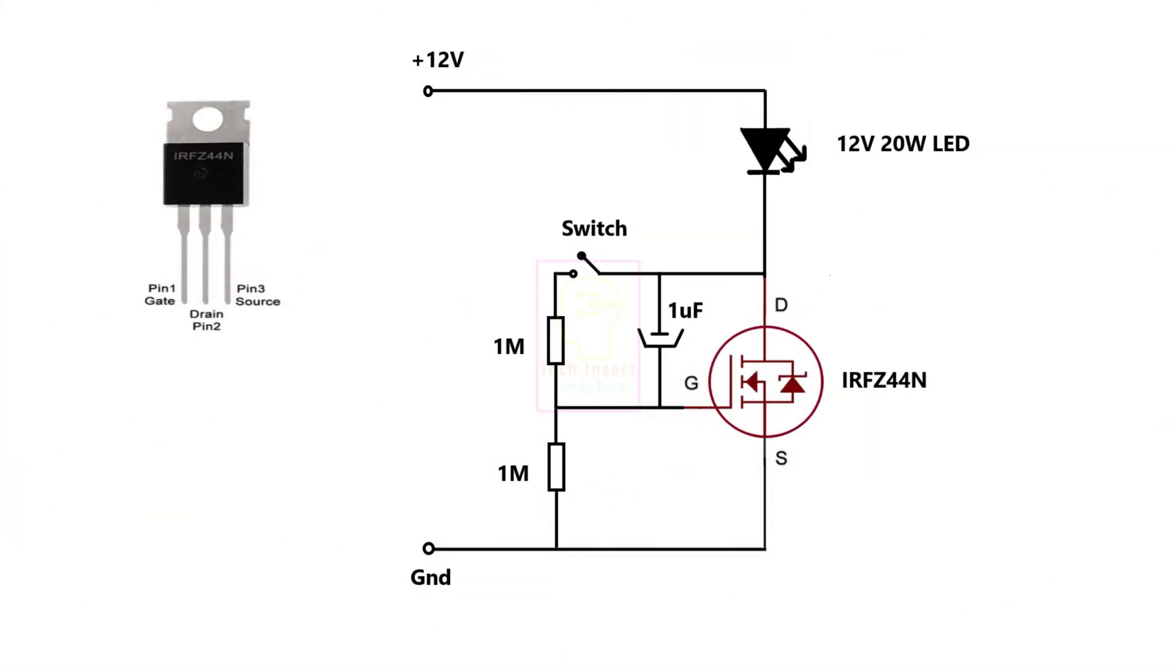When the switch is set to off position, the capacitor will be charging and the gate will get negative supply through 1 mega ohm resistor.